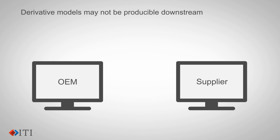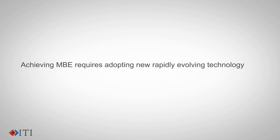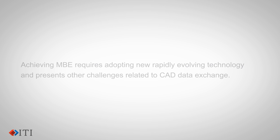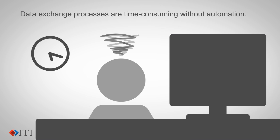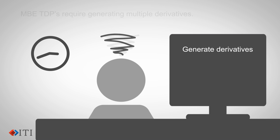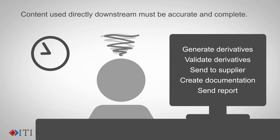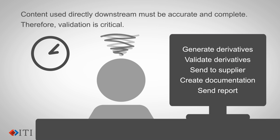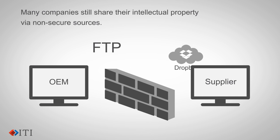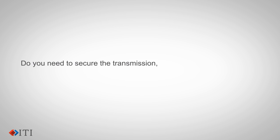Derivative CAD models may not be directly usable downstream due to quality issues. Achieving MBE requires adopting new and rapidly evolving technology, and presents other challenges related to CAD data exchange. Data exchange processes without automation are time consuming. MBE TDPs require generating multiple derivatives, and content used directly downstream must be accurate and complete — therefore validation is critical. Many companies still share their intellectual property via non-secure sources. Do you need to secure the transmission, sharing and exchange of your data?